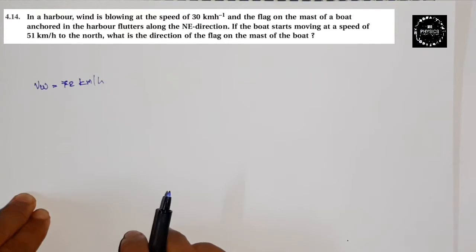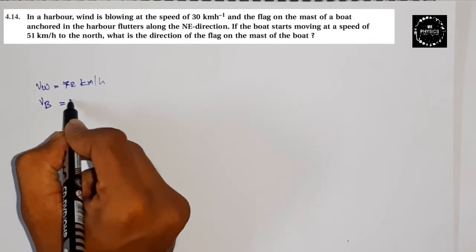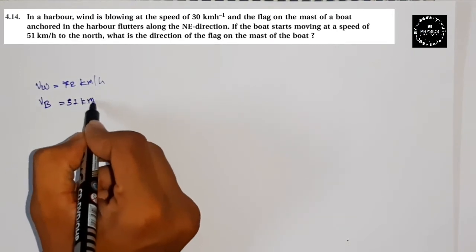Next, the flag on the mast of the boat anchored in the harbor fluttered along the northeast direction. The flag is fluttering in the northeast direction. If the boat starts moving with a velocity which is 51 kilometers per hour.